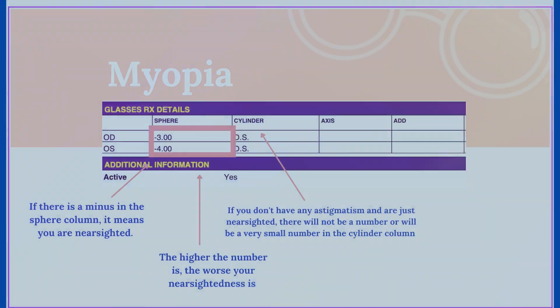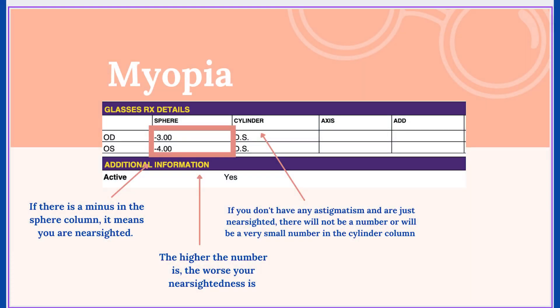The standard way that most glasses prescriptions are written uses columns. The first column is sphere, the second column is cylinder, then axis, and then typically an add power. Let's go through each column step by step.